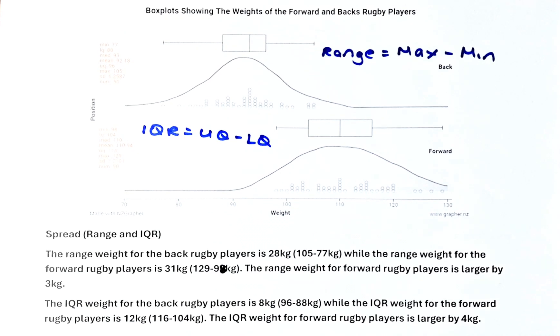Good day and welcome to video number five, where we are going to analyze the spread. Another word for spread is distribution. There are two spreads in level one, two, and three statistics — they are called the range and interquartile range.